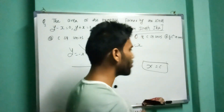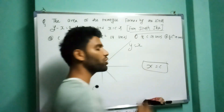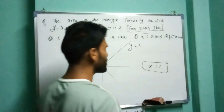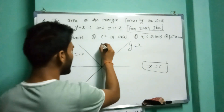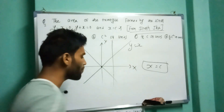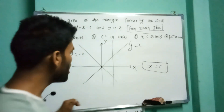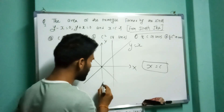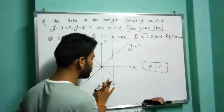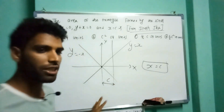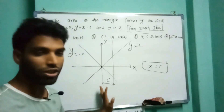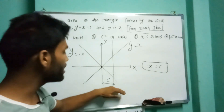The line x equals c is parallel to the y-axis. x is constant at c, so the distance from the y-axis is c.